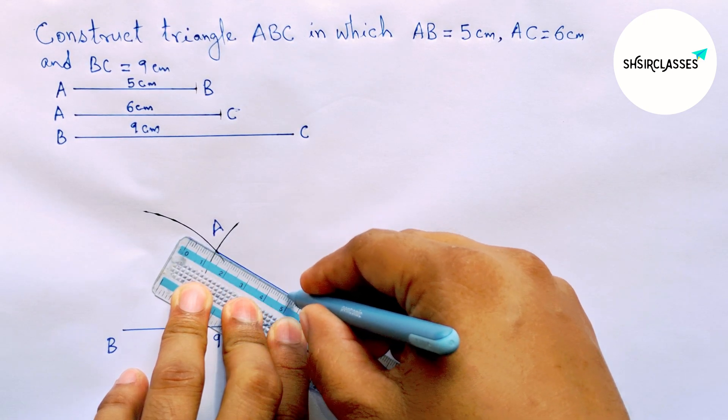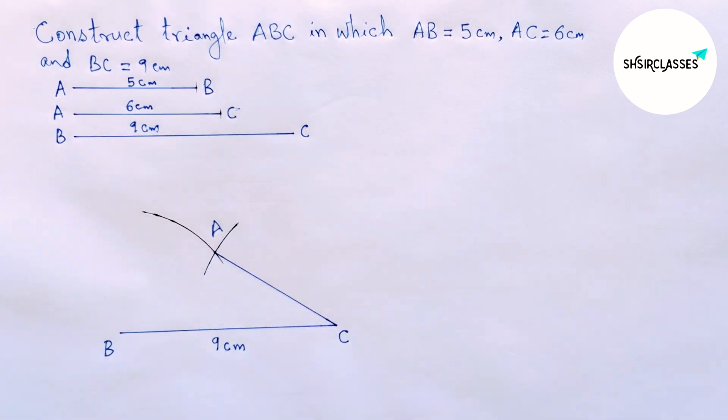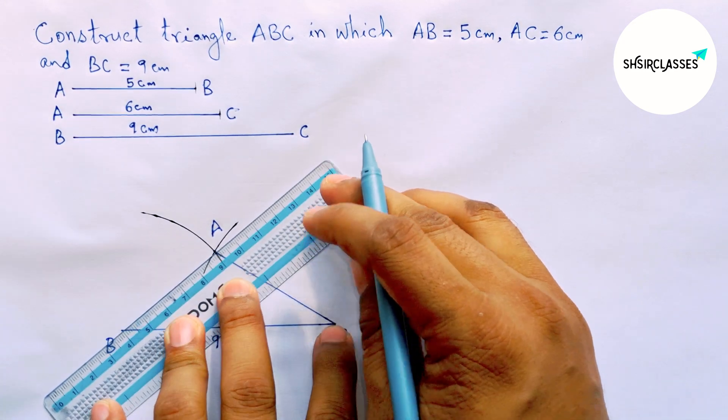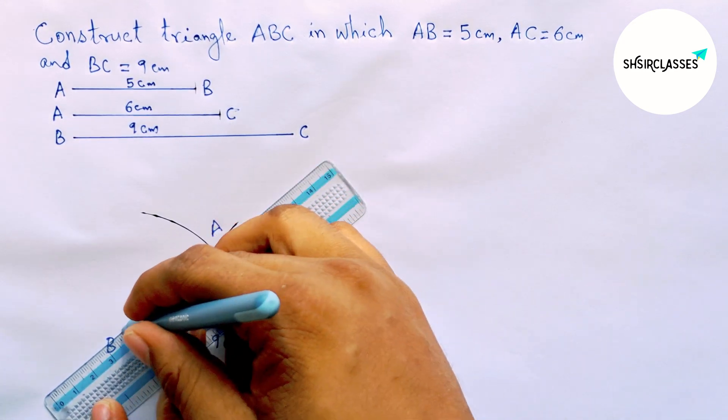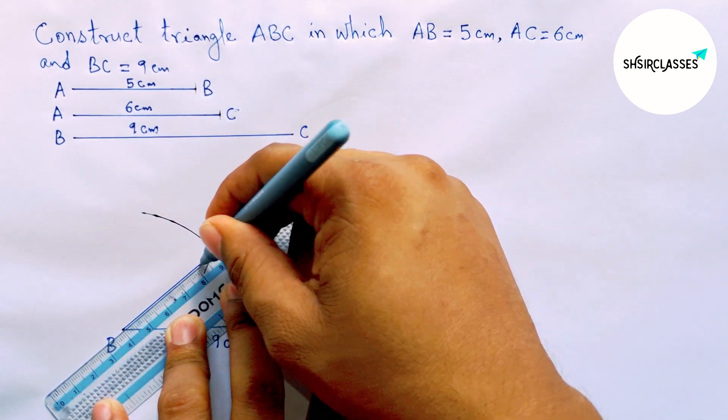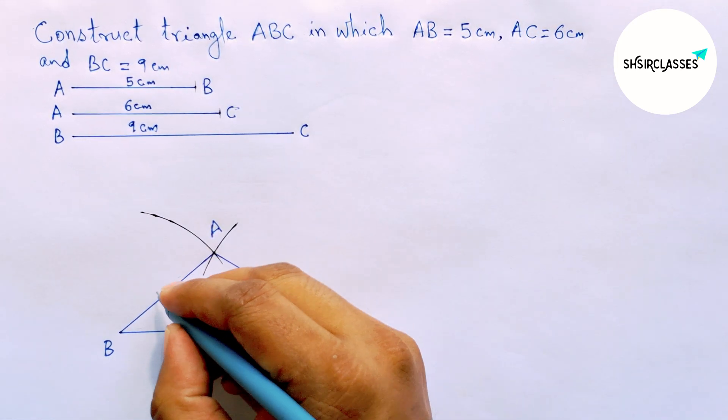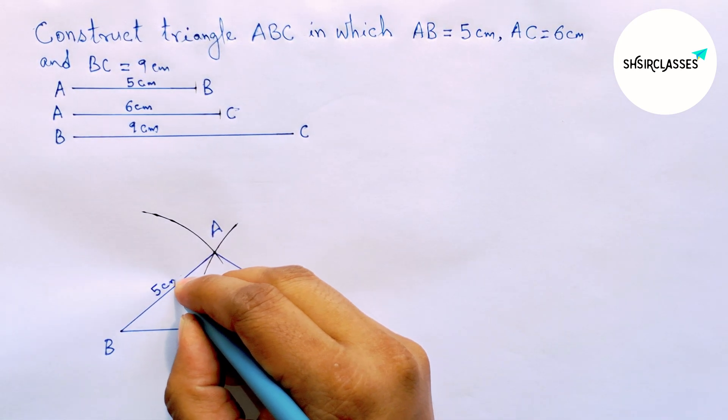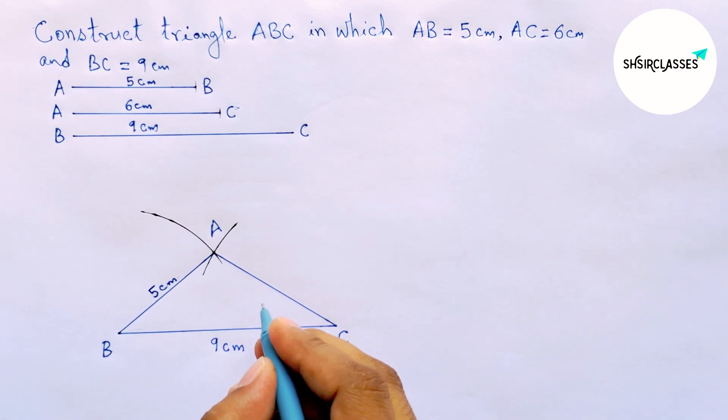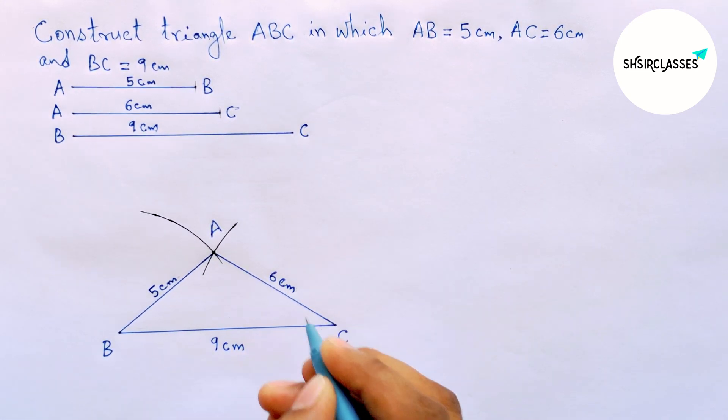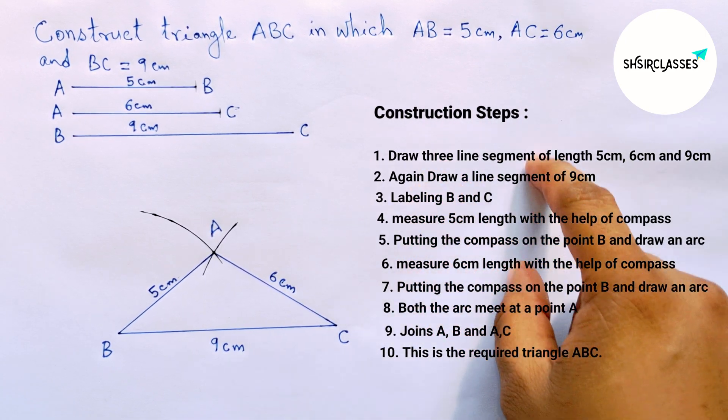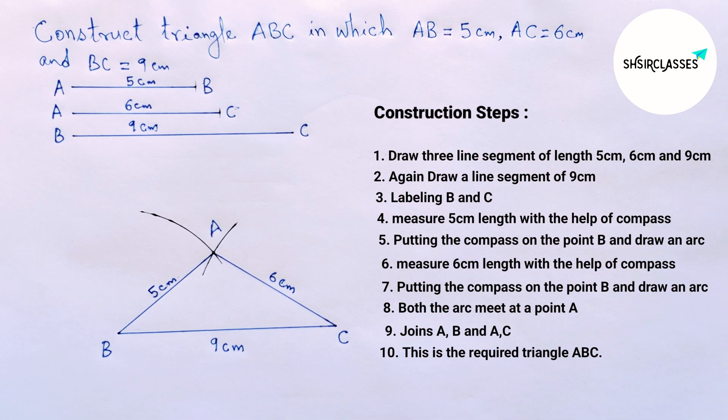Now first joining A and C, then joining A and B to complete our required triangle ABC. So here AB this is five centimeter and AC equal six centimeters. And this is the required triangle ABC. And here I will provide all the construction steps. So that's all.